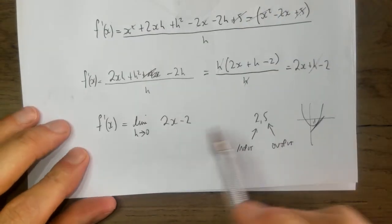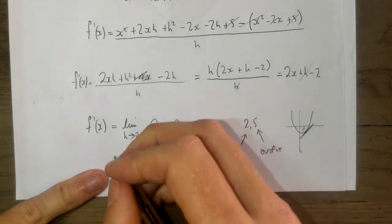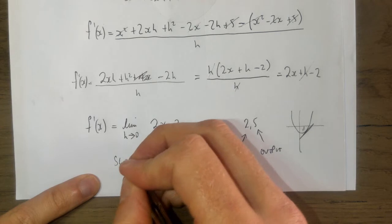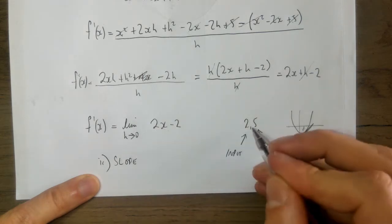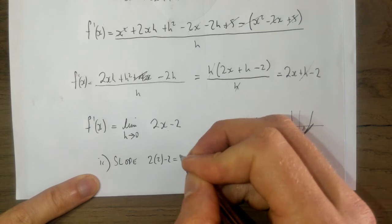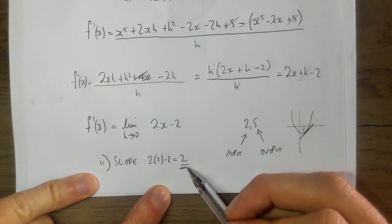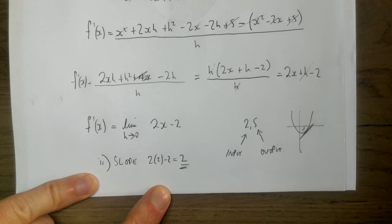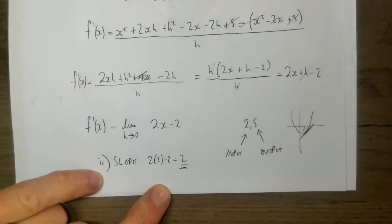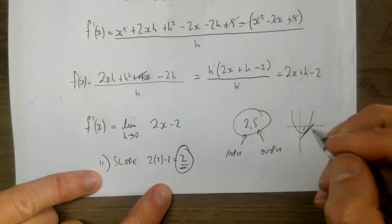So this derivative is basically an expression for the slope anywhere on the curve. When x equals two, the slope - this is part two - is equal to two times two minus two, which is four minus two, which is two. So the slope of the curve when x equals two is two. Part three says: find the equation of the tangent to the curve at the point two, five. We're linking in with coordinate geometry of the line - we know the slope is two.